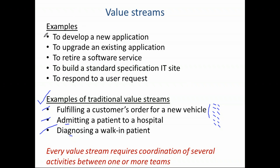There may be many other value streams — the ones above are IT-specific value streams. We're going to cover how to create a new service and how to respond to a user request. Other types of value streams include: upgrading an existing application, retiring a software service, building a standard specification, or deploying a network and systems for a new site. That kind of value stream may involve people from networking, user desk support, inspection, and other areas to ensure the site is ready per required policies and technical specifications.